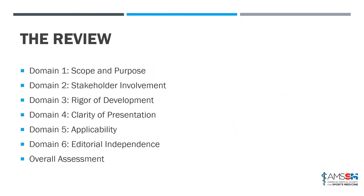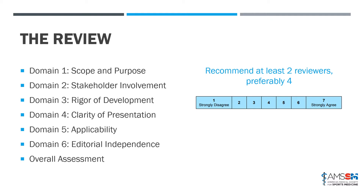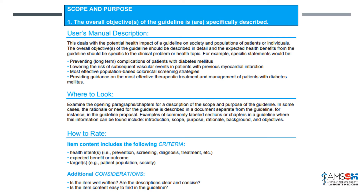I'm going to walk through the main outline of this instrument. It's a 23-item instrument split up into six domains. When doing the review, it's recommended to have at least two reviewers, but preferably four — it's been validated for two to four, and we recommend having four different reviewers. For each of the 23 items, there is a question with a seven-point Likert scale ranging from strongly disagree to strongly agree.